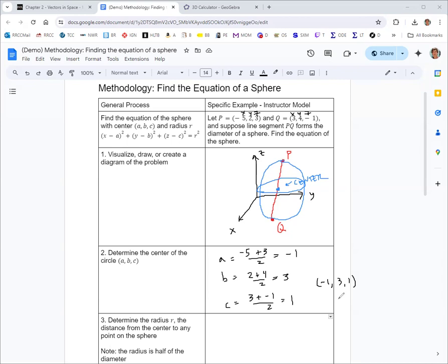For step three we'd find the radius, which is the distance from the center to any point on the sphere. We have the center from step two and we have two points on the sphere, P and Q. We could use either one, we'll use P, and we'll use the distance formula. The distance formula is the square root of the sum of the squares of the differences of the components in three dimensions. That's the two-dimensional distance formula, and there's our z part for three dimensions.